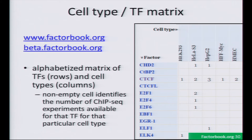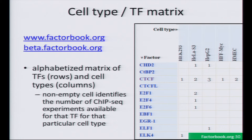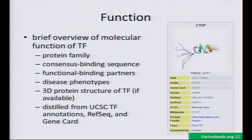There are two different sites now for Factorbook. One is the original one, which is a bit aged now, and then there's the one I've re-implemented. On the main page, you get a matrix of cell types versus TFs. The number in the intersection is the number of ChIP-seq experiments from ENCODE that we have. Right now you can click on the TF, and at some point you'll be able to click on the cell type also. Then you get a page that has a bunch of information.